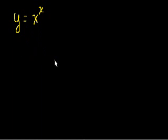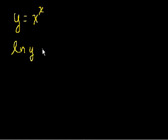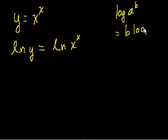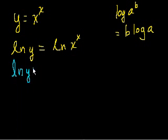Here is the trick: take the natural log of both sides. You get the natural log of y equals the natural log of x to the x. Using the logarithm property that log of a to the b equals b times log of a, we can rewrite this as the natural log of y equals x times the natural log of x. Now we can implicitly differentiate this.